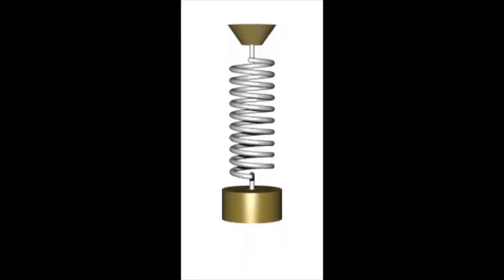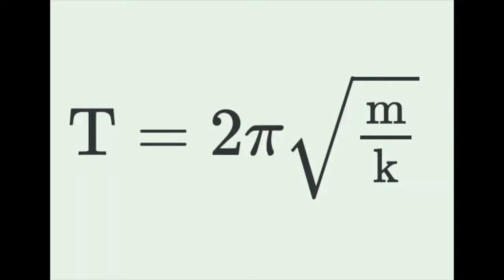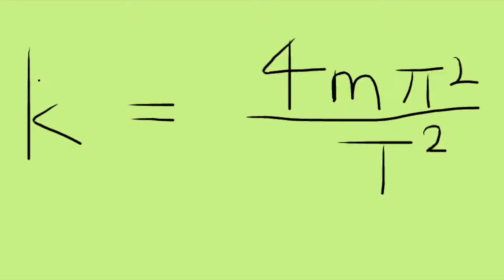First, let's find the spring constant k. To solve for k, we can use the formula for the period of an oscillating spring, T equals 2 pi times the square root of m over k. If we isolate k, we get the equation k equals 4m pi squared over T squared. Now we just have to solve for T.